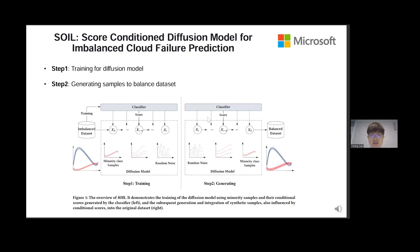SOIL comprises two key steps: training and generating. In the training step, we leverage high-quality samples and their corresponding probability scores as input to train the diffusion model.